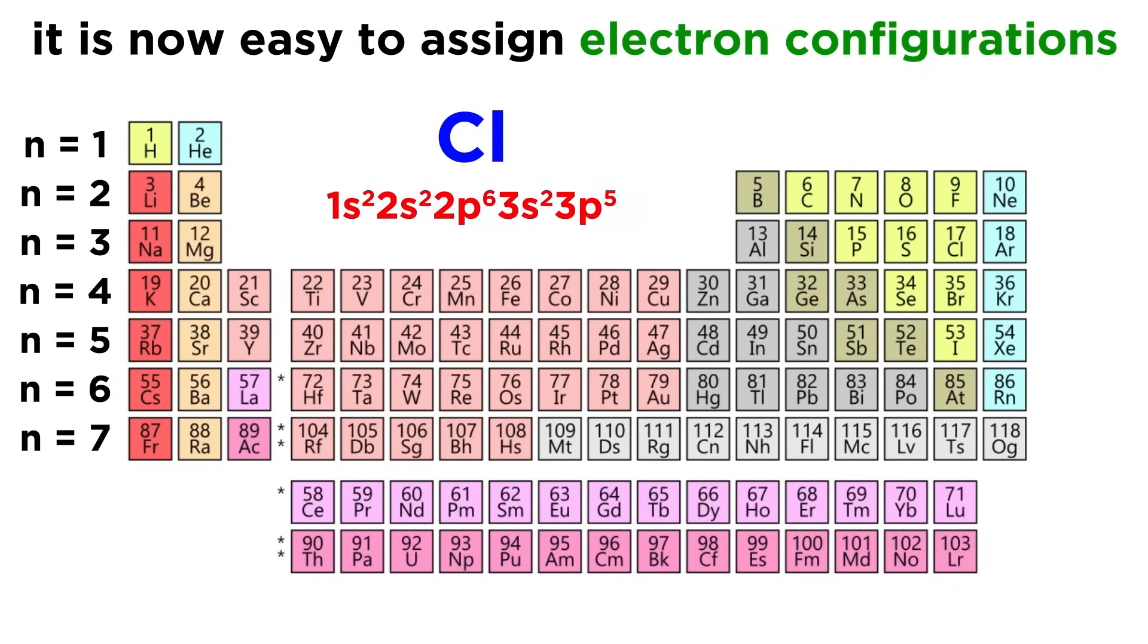That gives us 1s², 2s², 2p⁶, 3s², 3p⁵ as the electron configuration for chlorine. This makes perfect sense, as neutral chlorine has 17 electrons to place, and this is the lowest energy configuration for the distribution of these 17 electrons.